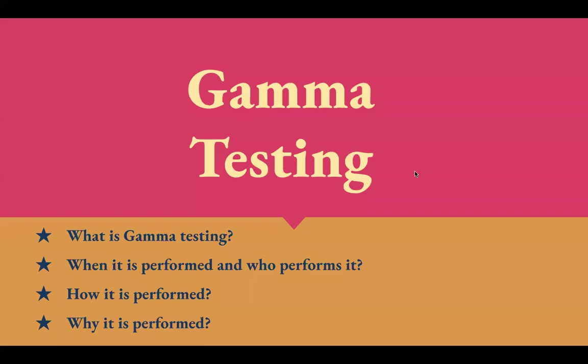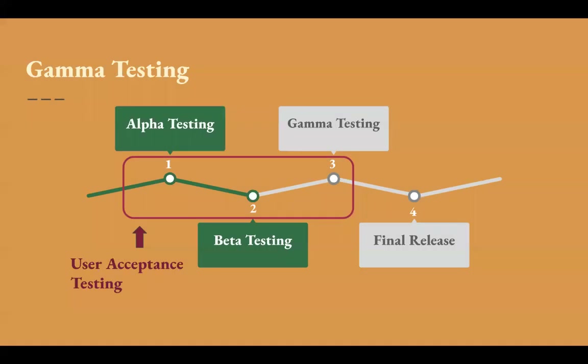This video covers everything about gamma testing. There are three types of user acceptance testing: first is alpha testing, second is beta testing, and third is gamma testing. The video links of alpha and beta testing are available in the description. Now let's talk about gamma testing.